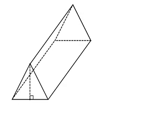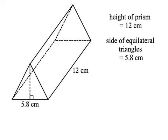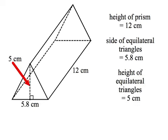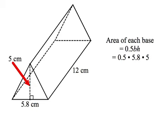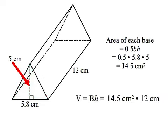Here's one more example: a triangular prism whose bases are equilateral triangles. The height of the whole prism is 12 centimeters, each side of the triangles is approximately 5.8 centimeters, and the height of each equilateral triangle is 5 centimeters. The area of each triangle is one half the base times the height; using a calculator we get 14.5 square centimeters. The total volume is the area of the base times the height: 14.5 times 12 equals 174 cubic centimeters.